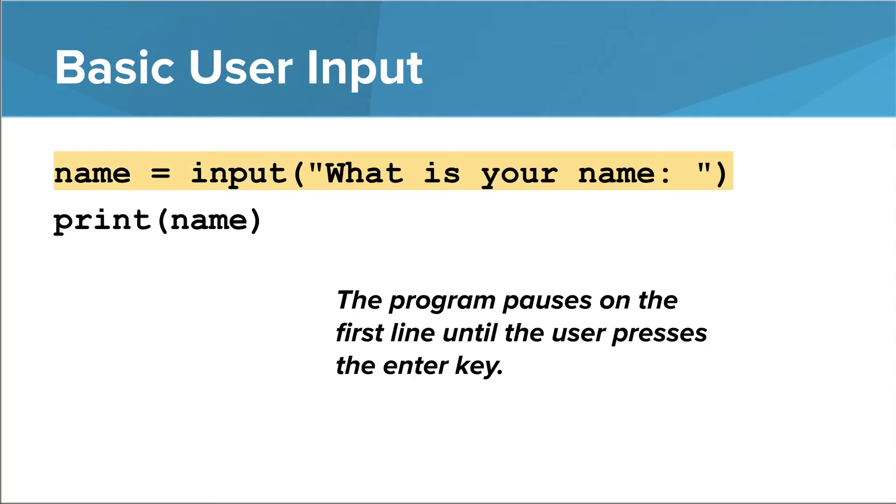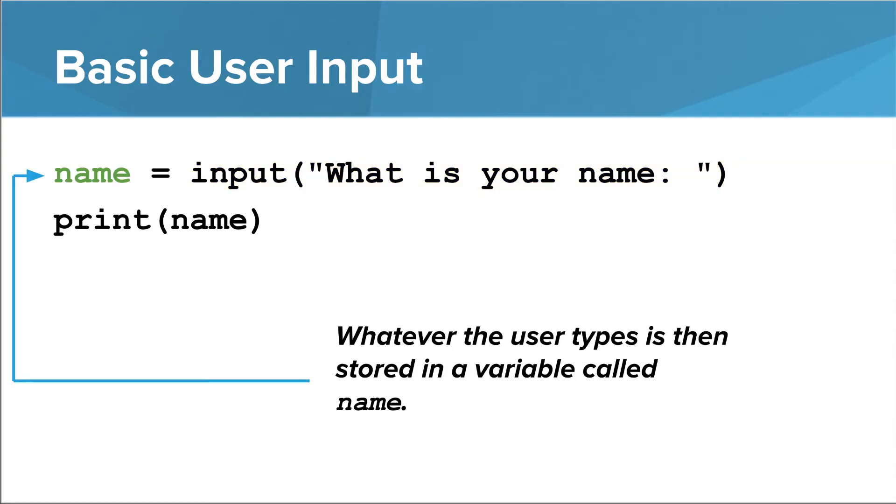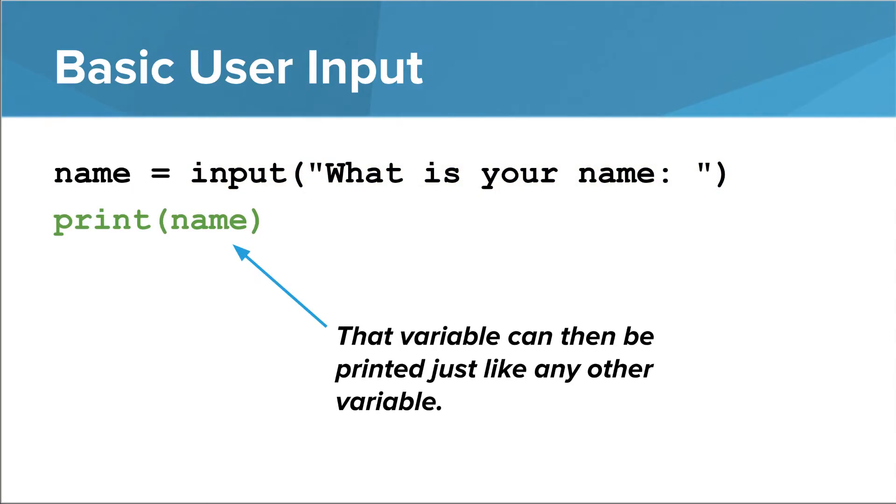What happens when you run this, and we'll see this in a second, is the interpreter actually pauses on this line and waits until the user types something and presses the enter key. Once the user is finished typing, whatever they typed is stored in a variable called name. Then as we've done in other programs, we can print out the variable name.